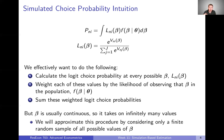The problem is that beta is usually continuous, so it takes on infinitely many values. We can't calculate the logit choice probability at infinitely many values. But what we can do to approximate this integral is consider only a finite random sample of all possible values of beta, and we'll see that this gets us something that is at least a consistent simulation of the true choice probabilities.